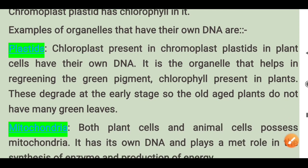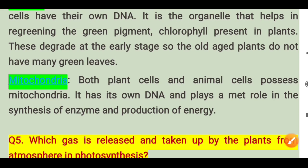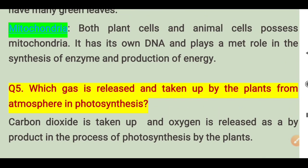Plastids and chloroplasts in the plant have their own DNA. The organelle helps in maintaining the green pigment chlorophyll present in plants, but this degrades at an early stage, which is why older plants do not have many green leaves. Mitochondria, found in both plant and animal cells, also have DNA and play a role in the synthesis of enzymes and production of energy. Question number 5: which gas is released and taken up by plants in photosynthesis? Carbon dioxide is taken up and oxygen is released as a by-product in the process of photosynthesis.